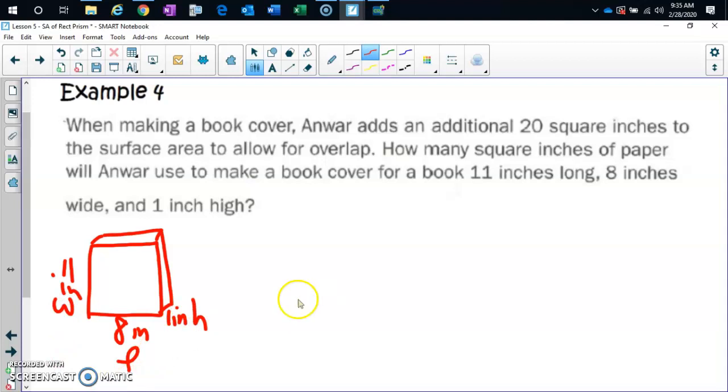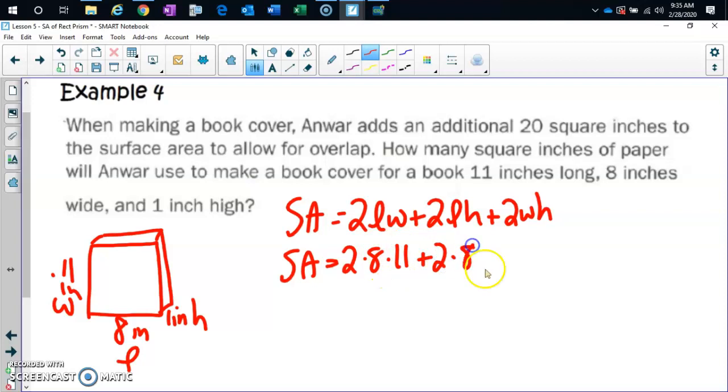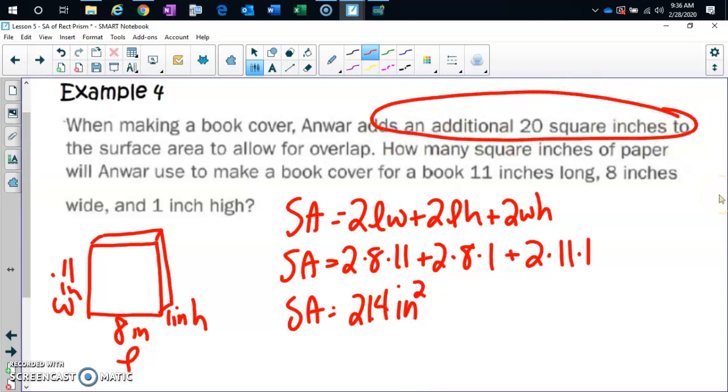So surface area, 2 length width plus 2 length height plus 2 width height. So let's see what I did here. 2 times 8 times 11, plus 2 times 8 times 1, plus 2 times 11 times 1. Make sure you use the right combination, because if you don't, your formula is going to be off. So our surface area is going to be 214 square inches. But what does it say? He wants to add an additional 20 inches. So what do I have to do? So I'm going to have 234 square inches needed.